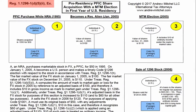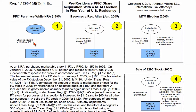This is one of my favorite examples in the PFIC regulations because it explains a tricky concept that a lot of people initially misunderstand. The example deals with A, a non-resident alien who purchased marketable stock of Corp. FX, which was a PFIC, in 1995 for $50.